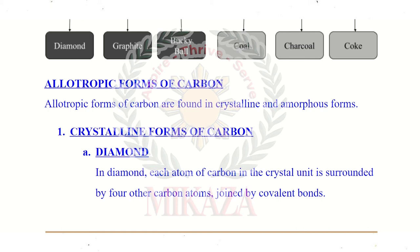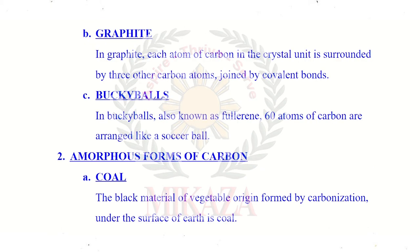The second crystalline form is graphite. In graphite, each atom of carbon in the crystal unit is surrounded by three other carbon atoms joined by covalent bonds. Graphite carbon atoms are bonded to three carbon atoms, and one electron per carbon is free.